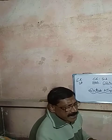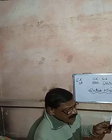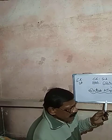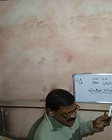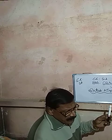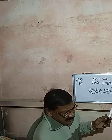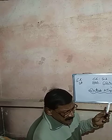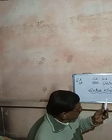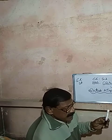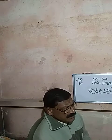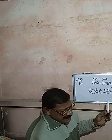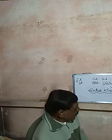Unfortunately Qutbuddin Aibak died while constructing the minar. The incomplete work of Qutub Minar was completed by Qutbuddin Aibak's son-in-law. It became one of the tallest towers of India and its fame and glory reached far and wide. People from different parts of the world still come to visit this tower, which is located at Delhi. These are the points of lesson number 43.